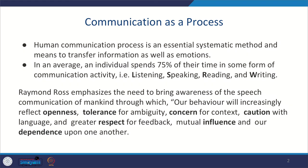So human communication process is an essential systematic method. Why systematic? Because when we have words, we actually want to use words in the form of a sentence — there is a pattern: the subject will come, then the verb, then the object, and depending upon the length of the sentence, you may have several adjuncts. So human communication process is an essential systematic method.